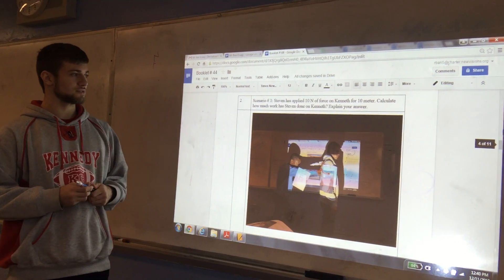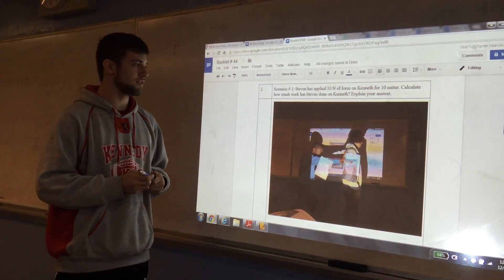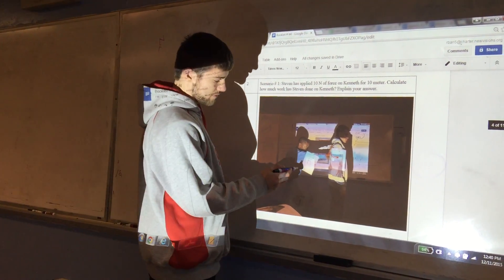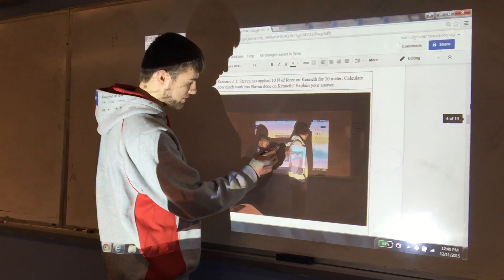Scenario 1: Steven applied 10 newtons of force on Kenneth for 10 meters. Calculate how much work has Steven done on Kenneth. Explain your answer. Steven is representing the force, and the force is moving this way.